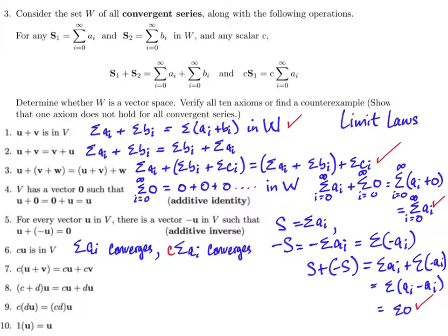The same thing holds for scalar multiplication. If you start with a convergent series, and you multiply it by a scalar c, and it converges, the series converges to a number. So you multiply that number by c, and you get another convergent series. So I'm not going to continue. All of these all hold true. And they all hold true by the limit laws from calculus one, because a convergent series is a limit of a sequence of real numbers.